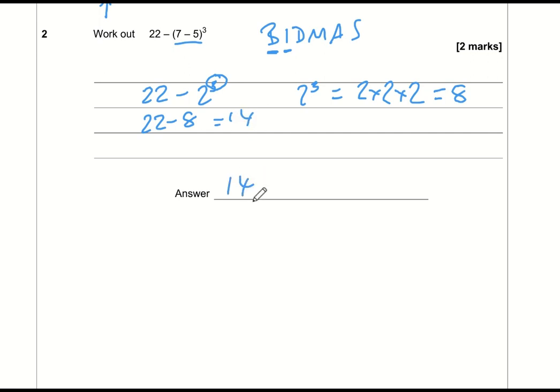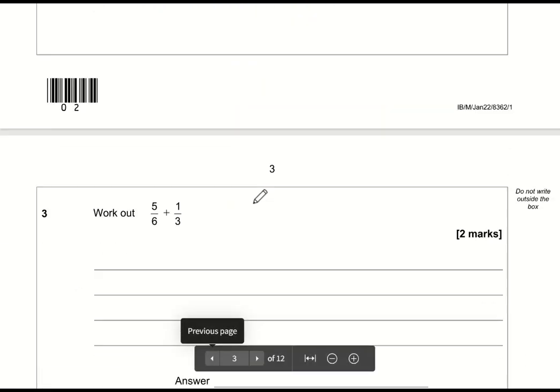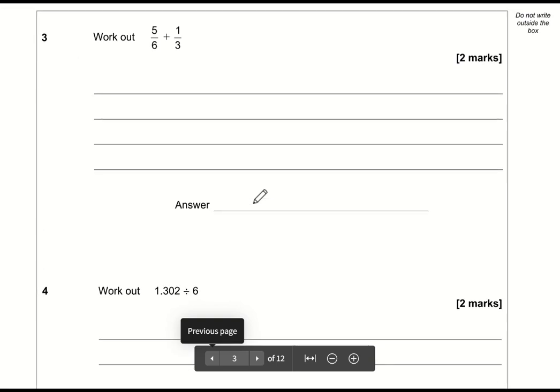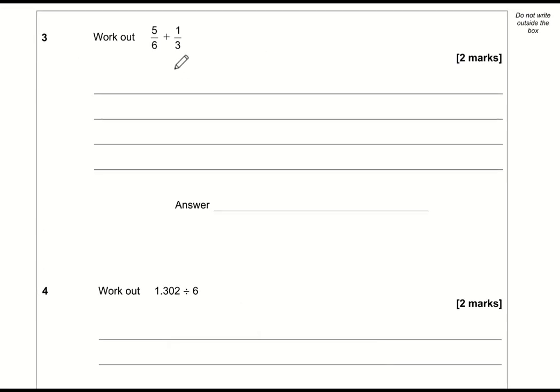Question 3: 5/6 plus 1/3. We can't add fractions when the denominator is different, but 3s go into 6, so I can turn 1/3 into a certain number of sixths. The bottom number has been doubled, so for an equivalent fraction, as long as I double the top, we're okay. 1/3 is the same as 2/6.